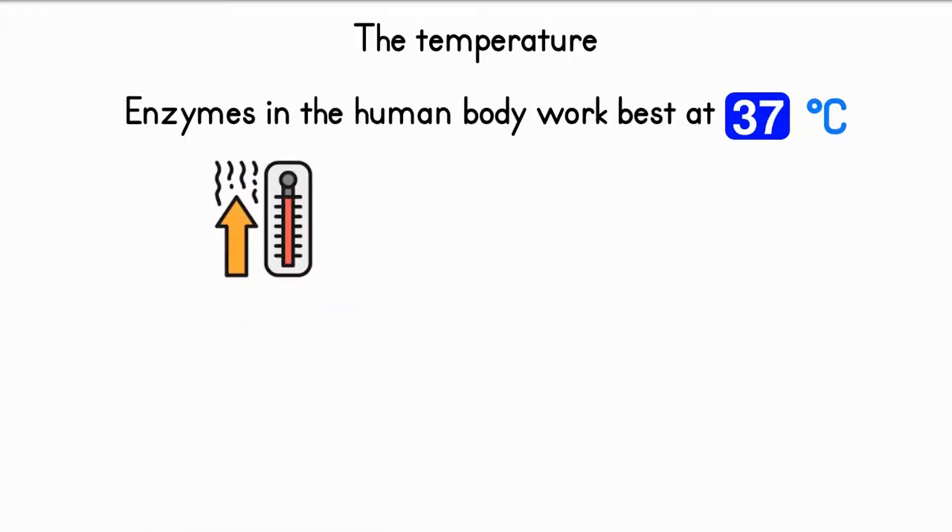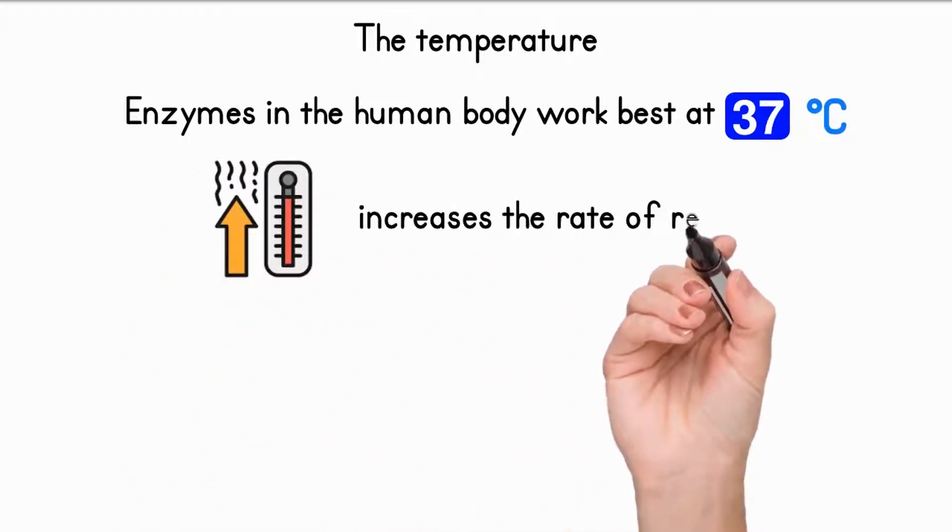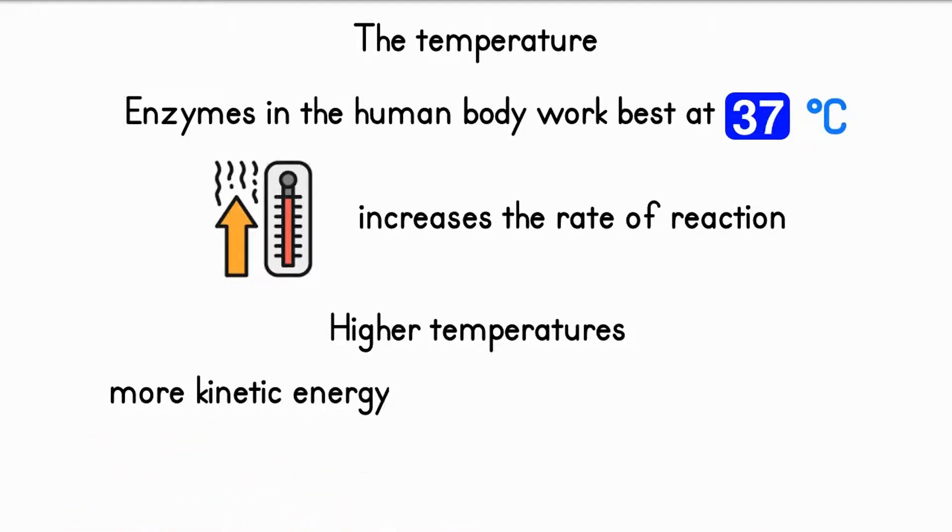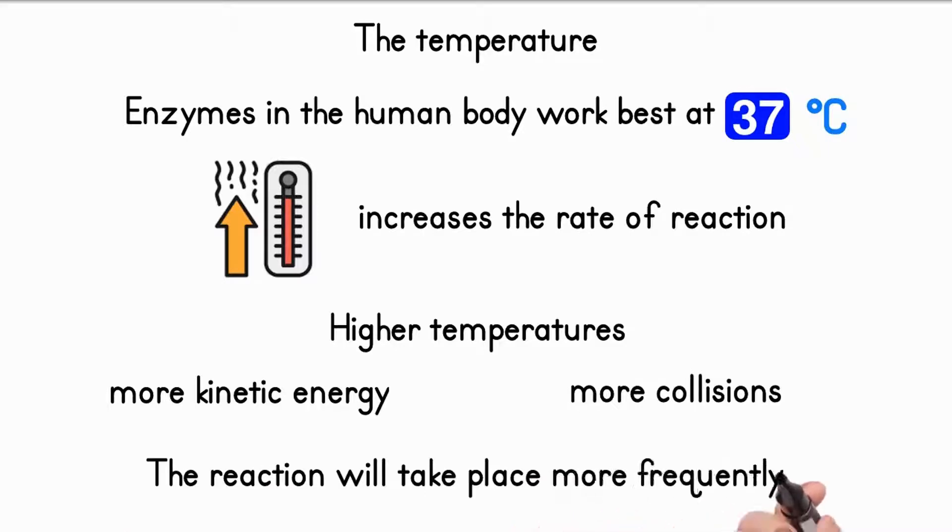As the enzyme is heated up to the optimum temperature, the rise in temperature increases the rate of reaction. This is because higher temperatures give the molecules of the enzyme and the substrate more kinetic energy, so they collide more often. More collisions means that the reaction will take place more frequently.